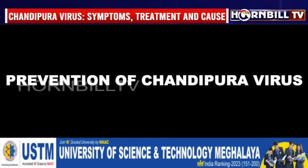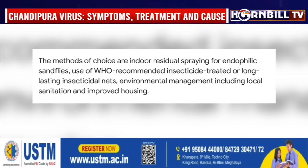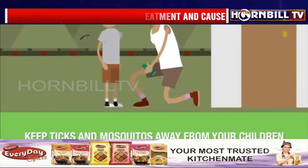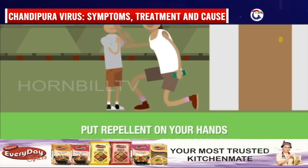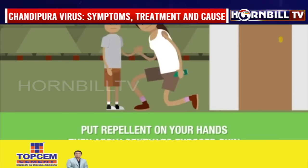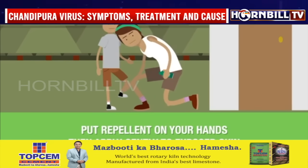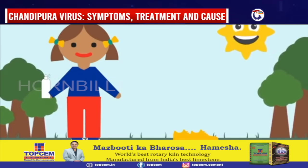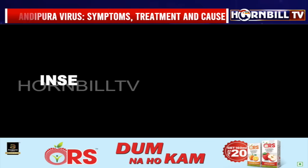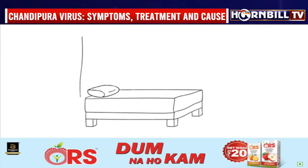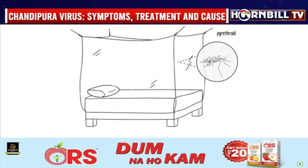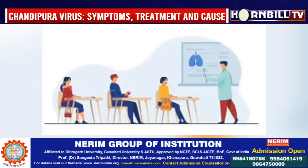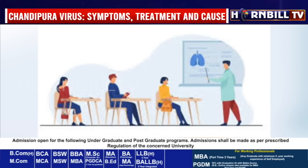Prevention of Chandipura vesiculovirus: Preventing infection involves controlling the sand fly population and protecting individuals from bites. Key preventive measures include applying insect repellent on exposed skin to ward off sand flies, wearing long-sleeved shirts and pants especially in areas known to have sand flies, using insecticide-treated nets to prevent bites during sleep, and public health education to raise awareness about the disease and its transmission methods to encourage preventive practices.